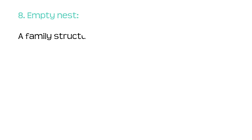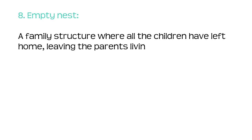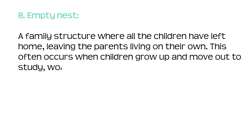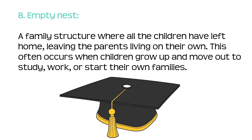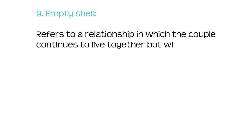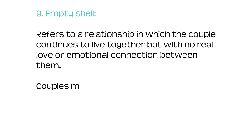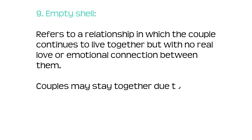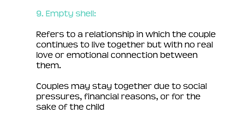Number eight: empty nest. A family structure where all the children have left home, leaving the parents living on their own. This often occurs when children grow up and move out to study or work or start their own families. Number nine: empty shell. This refers to a relationship in which the couple continues to live together but with no real love or emotional connection between them. Couples may stay together due to social pressures, financial reasons or for the sake of the children.